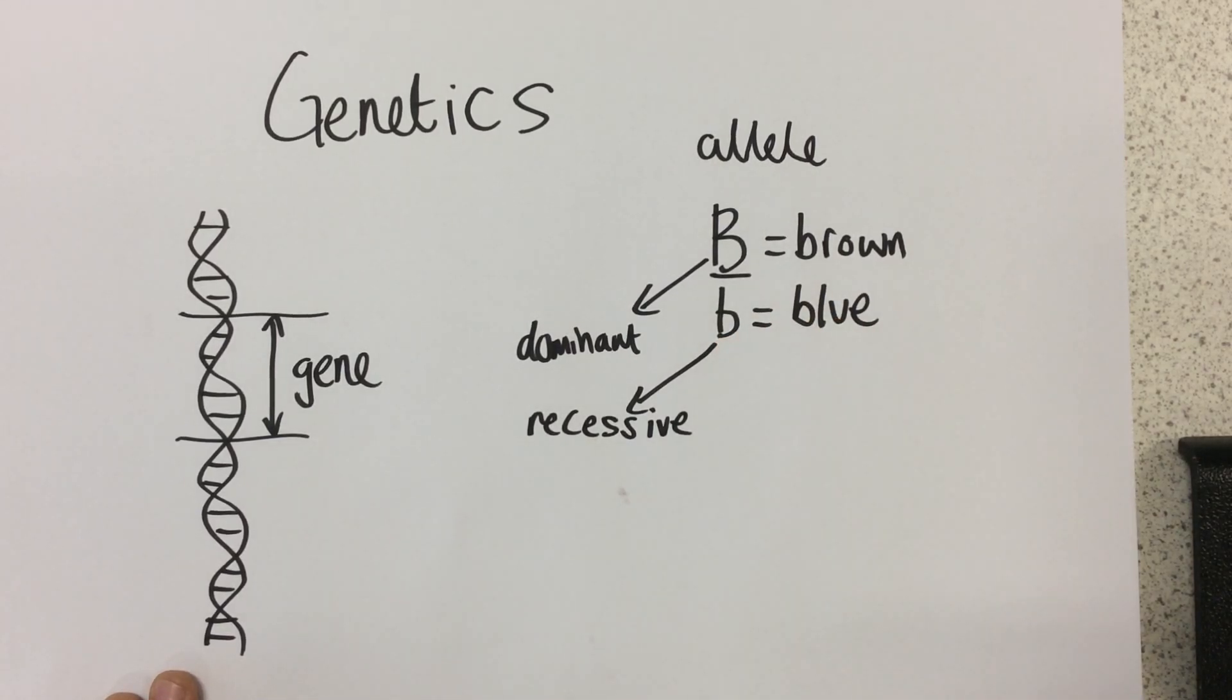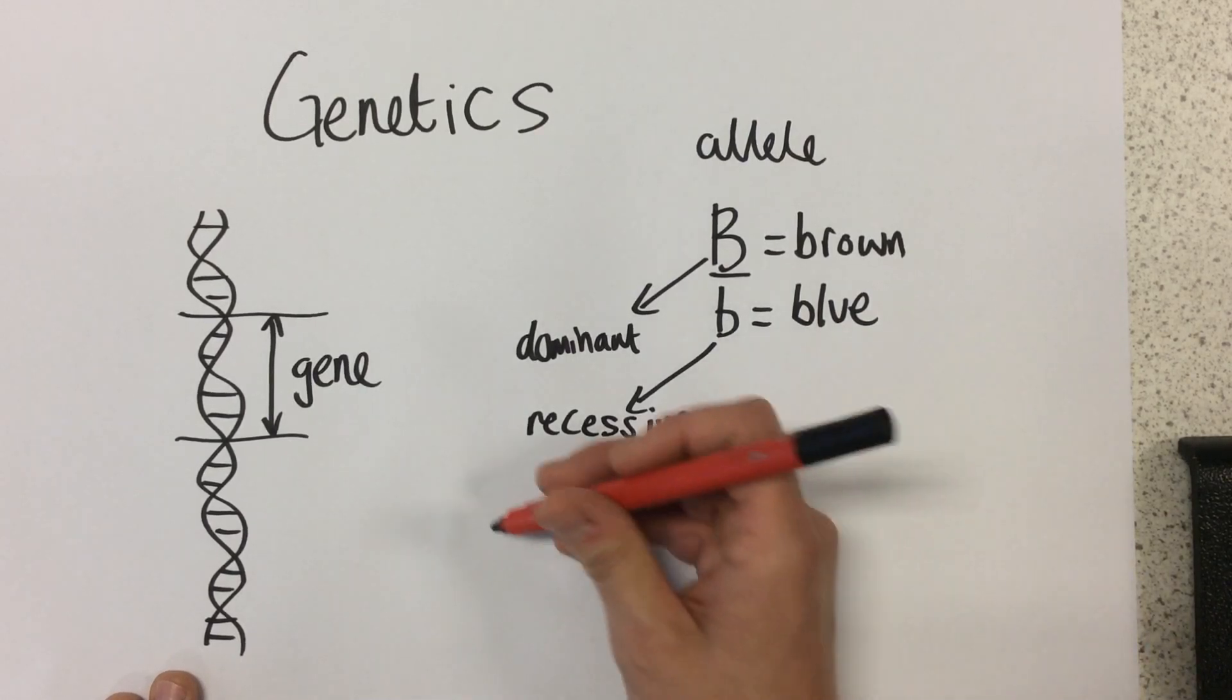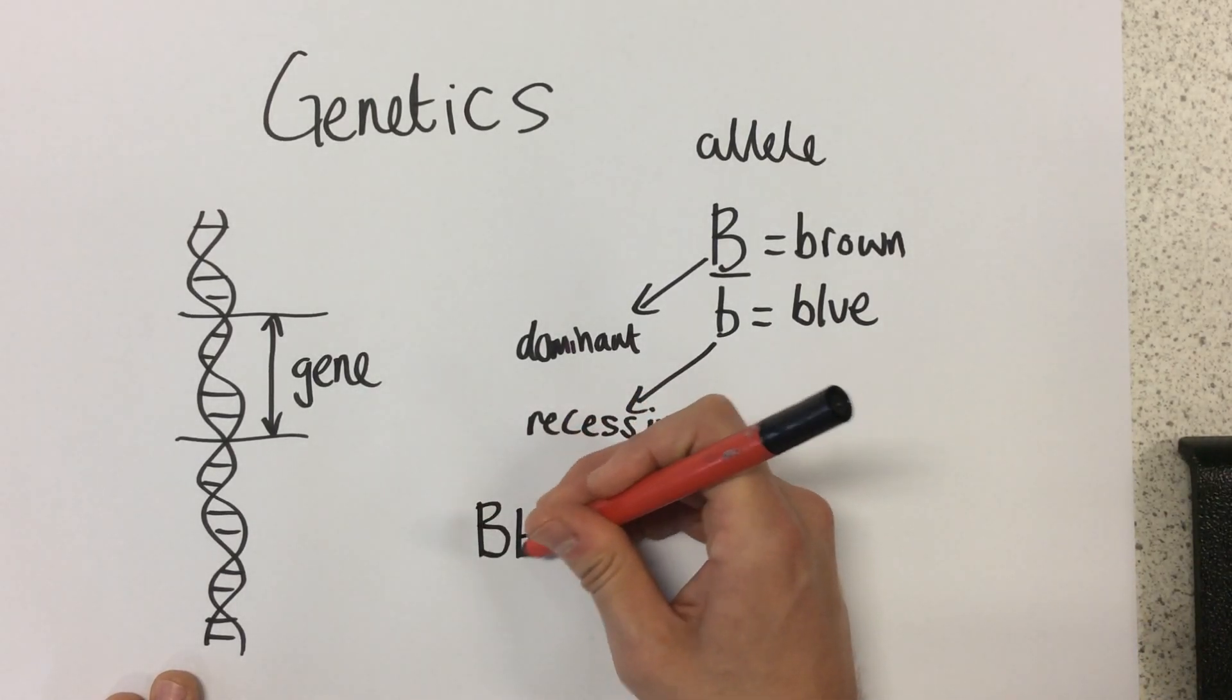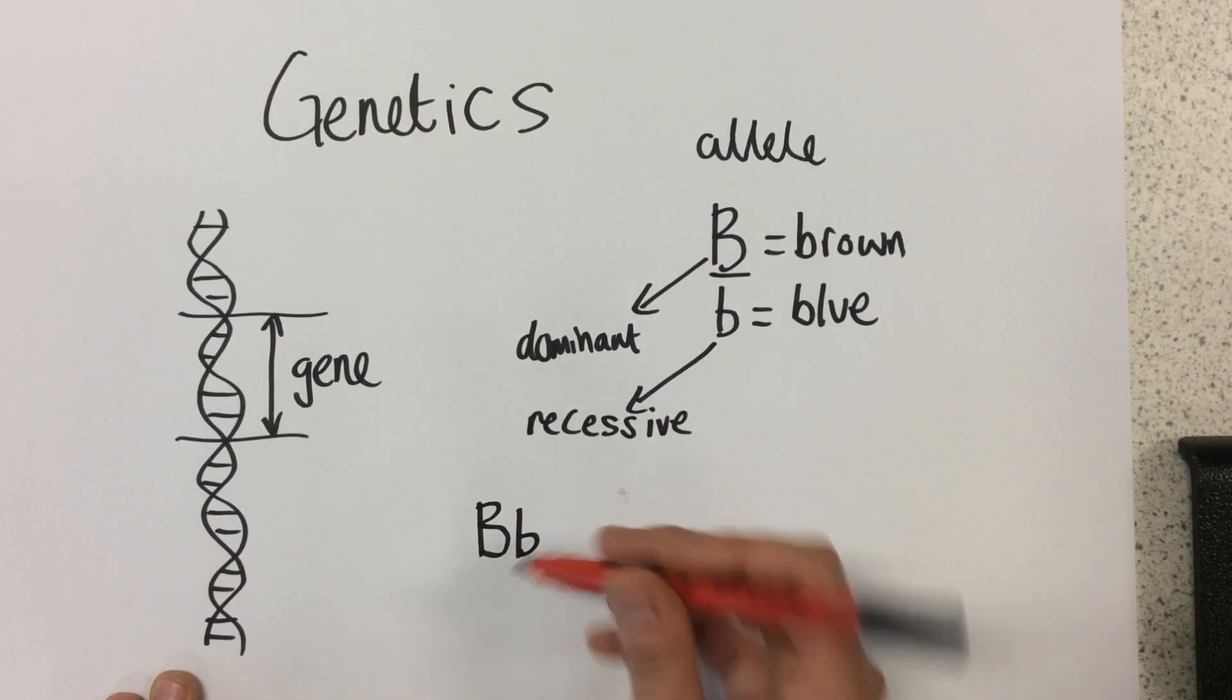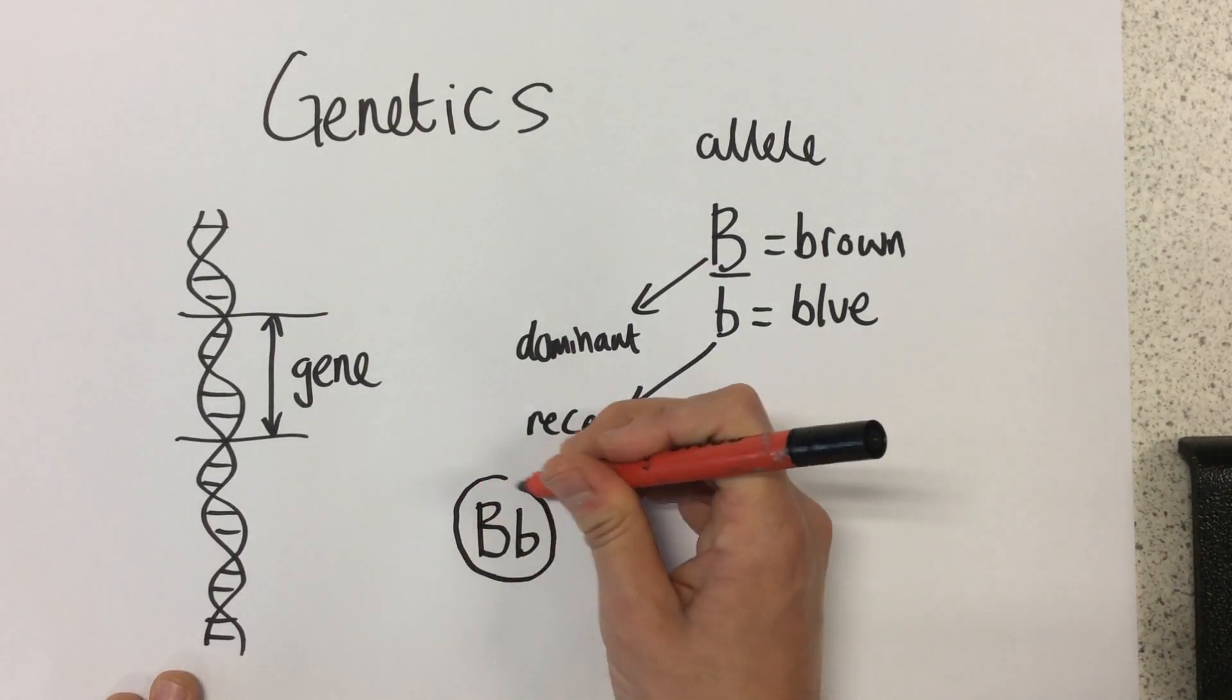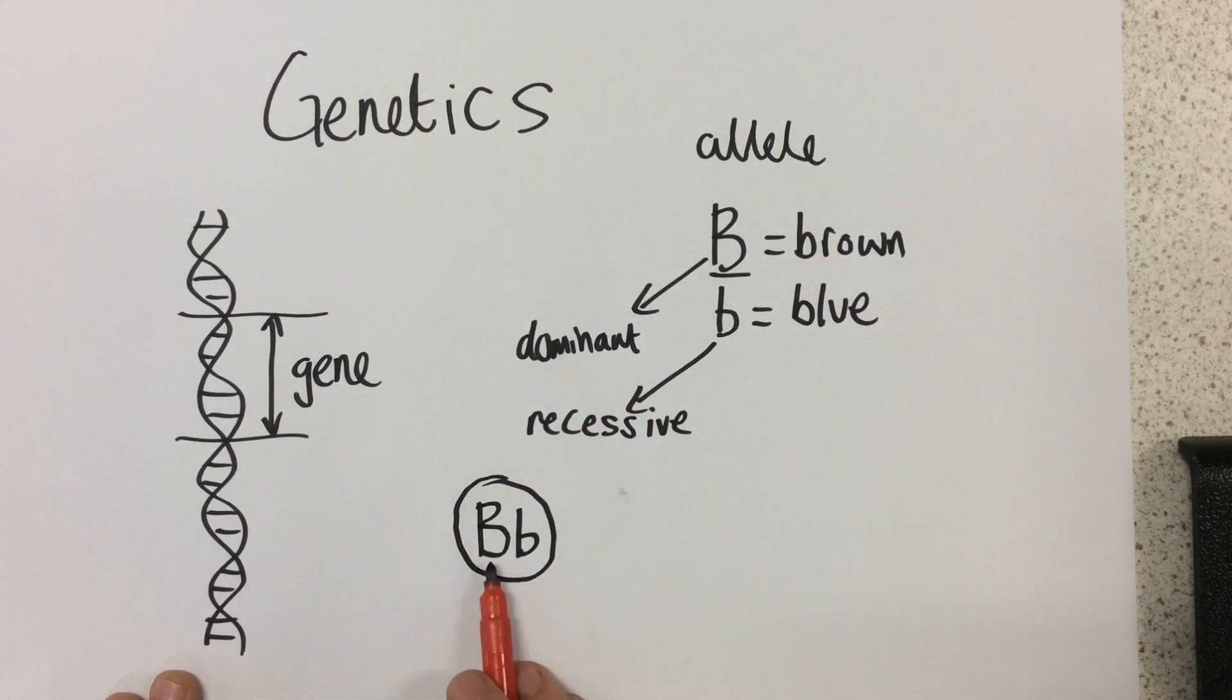So first of all, we have the term that we need to know called genotype. Now genotype is just the type of genes that you have. So this here could be your genotype because you have this gene, this particular allele, and this gene, this particular allele. Remember, alleles are just different versions of the same gene. In this case, for eye color.